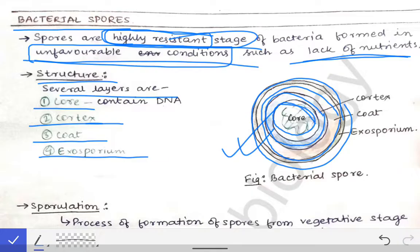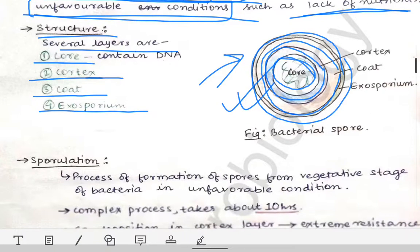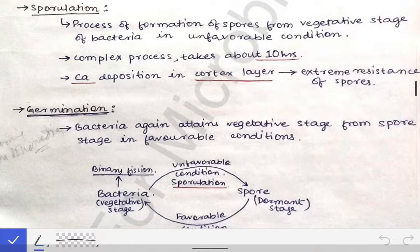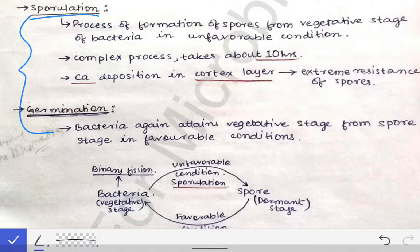This is the basic structure formed when there are unfavorable conditions outside. Sporulation and germination are the two processes involved — converting to spores and then converting back from the spore stage to the normal bacterial stage. We must remember the meaning of both sporulation and germination.